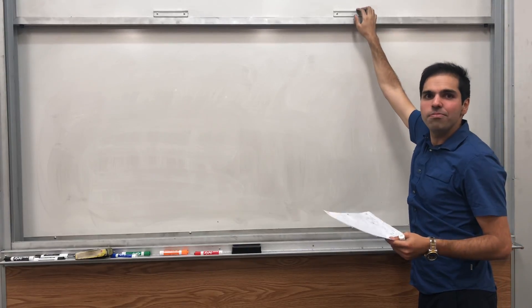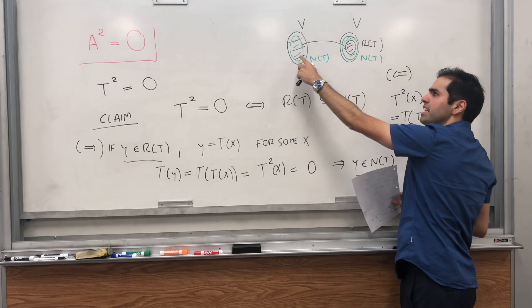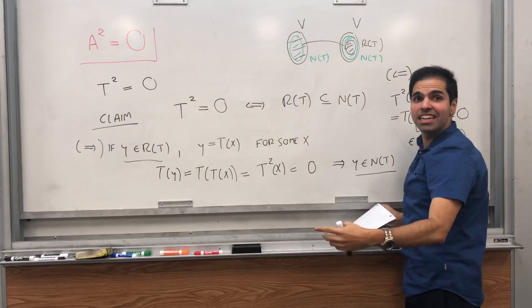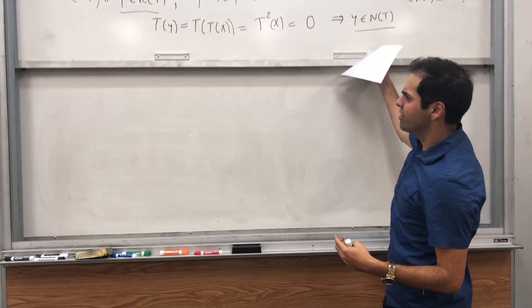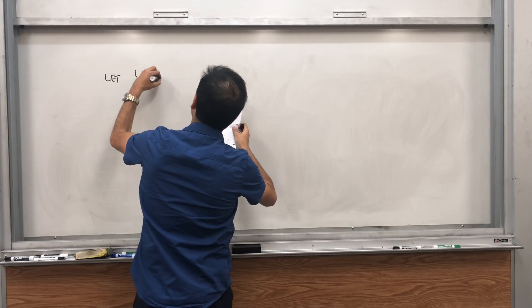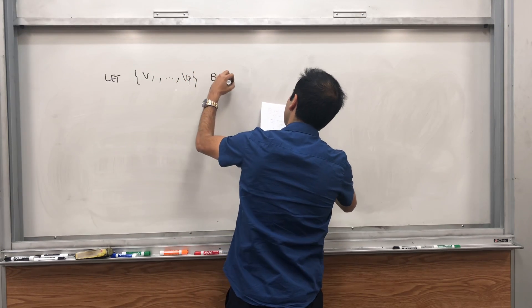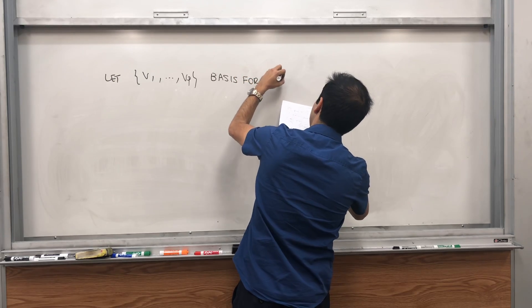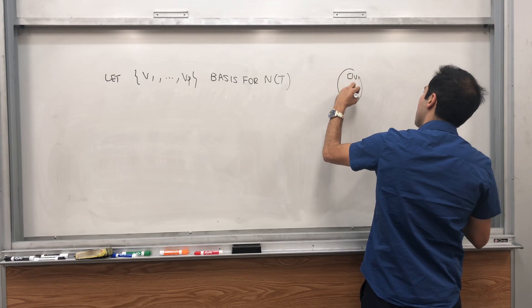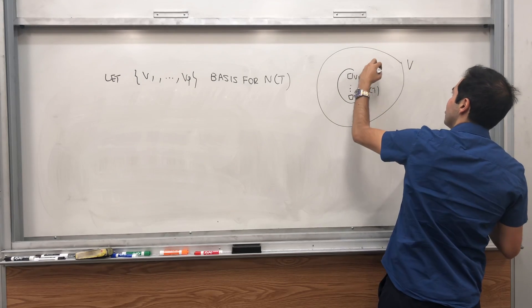And in order, again, to calculate a matrix, all you need is basis vectors of V. And the idea is, what we will do, we will start with basis vectors of the null space, and then extend it to basis vectors of V. So, let's say V1 up to Vp be a basis for the null space N of T. And then just take this mini basis,